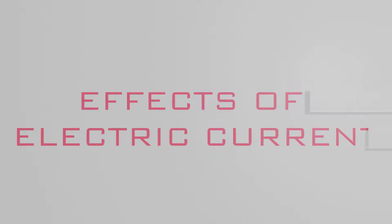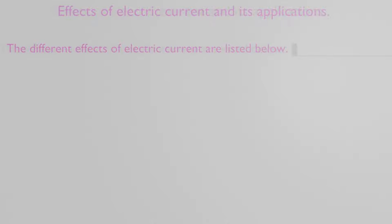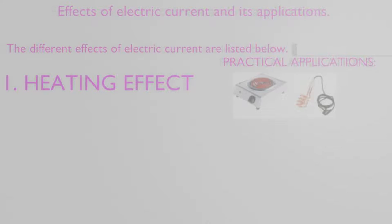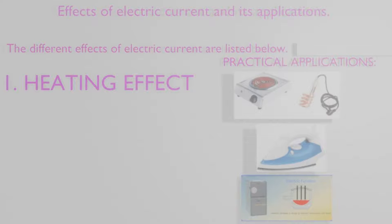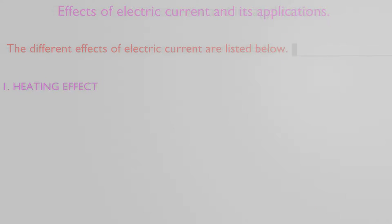Effects of electric current and its applications. The different effects of electric current are listed below. Number one: heating effect. When current flows in a conductive wire, the wire heats up. Practical applications: electric heater, electric iron, electric furnace, etc., work on this effect. Number two: lighting effect. In this case, electrical energy is converted into light energy.